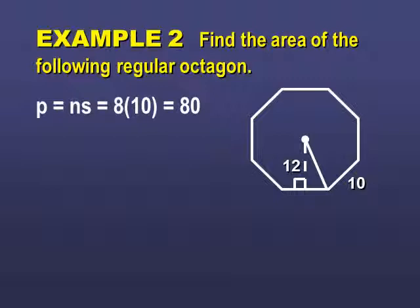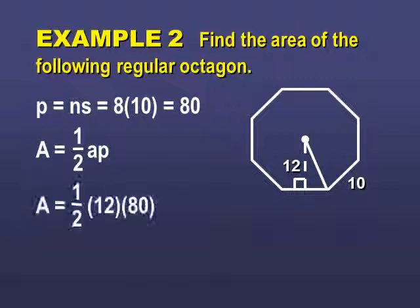So, here's my area formula. And I've got everything I need to just plug and chug this out. And I don't have units, so shame on me. 480 units squared is the area of this regular octagon.